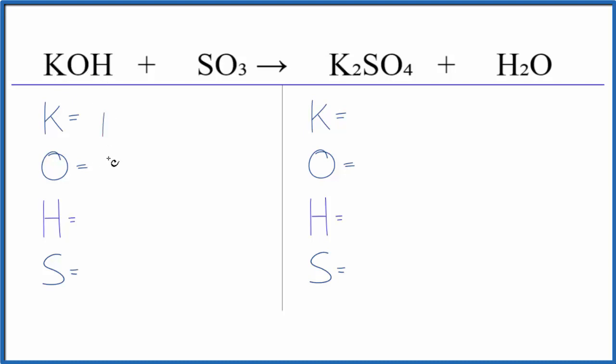One potassium, one oxygen, and be careful, we have three more oxygens over here. So we have four total oxygens, one hydrogen and one sulfur.